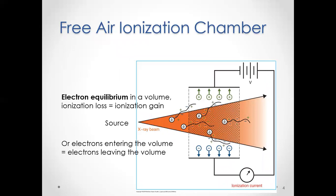A free air ionization chamber requires understanding electron equilibrium. Electron equilibrium in a volume means the ionization loss — electrons that travel through the volume but aren't absorbed or counted in it — is equal to what is gained. We assume that anything gained is the same as anything lost, so we call it even.